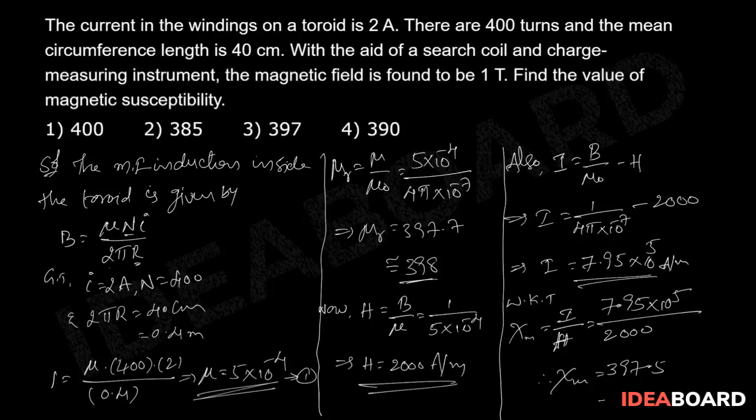Therefore the nearest value if you observe the options the nearest value that is 397 so correct option is the third one.